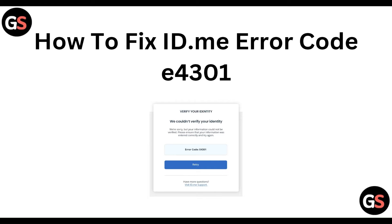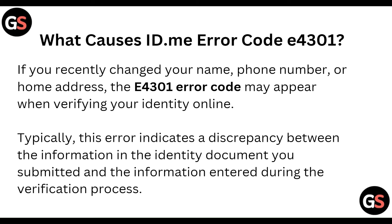So we are going to discuss what caused the id.me error code E4301. If your receptor changes your name or number on the home address, the E4301 error code may appear when verifying your identity online. Typically, this error indicates a discrepancy between the information in the identity document we submit and information entered during the verification process.